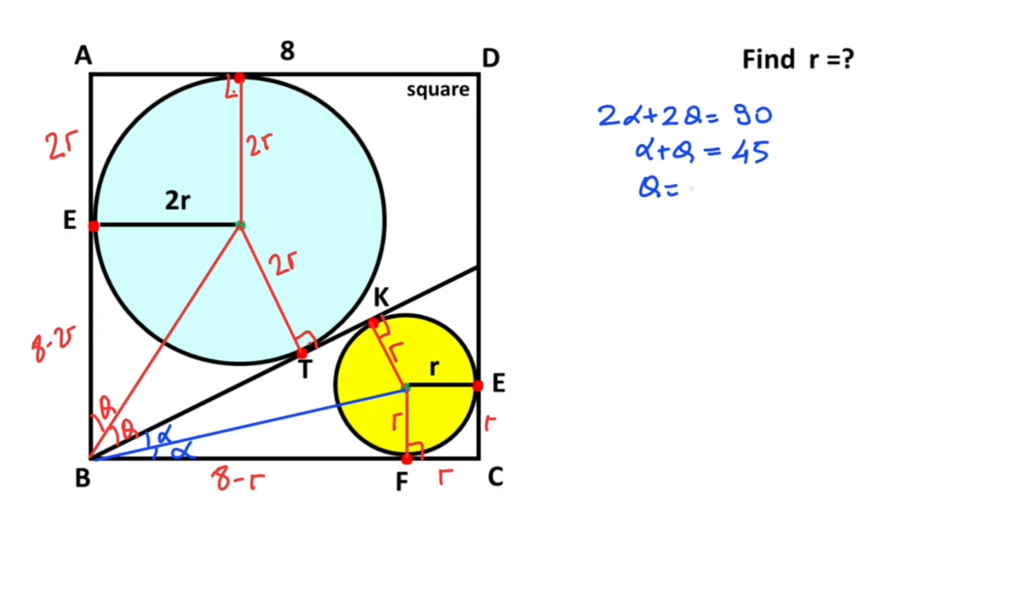So theta must be equal to 45 minus alpha. That's right here: theta equals 45 minus alpha. Then for this triangle, if we calculate tangent, tangent alpha. Then for this triangle, let's apply tangent of 45 minus alpha.